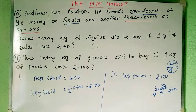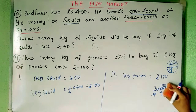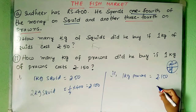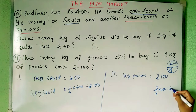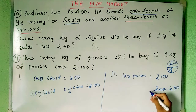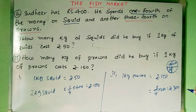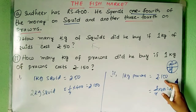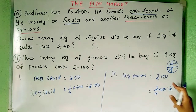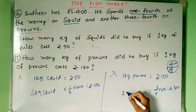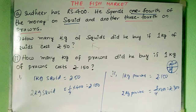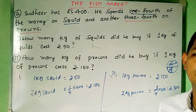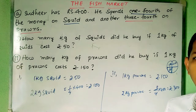So for ₹300, how many kg of prawns will he get? What is the relation between 150 and 300? It is nothing but twice — 150 twos are 300. So he will get 2 kg of prawns. That is the solution for this particular problem.